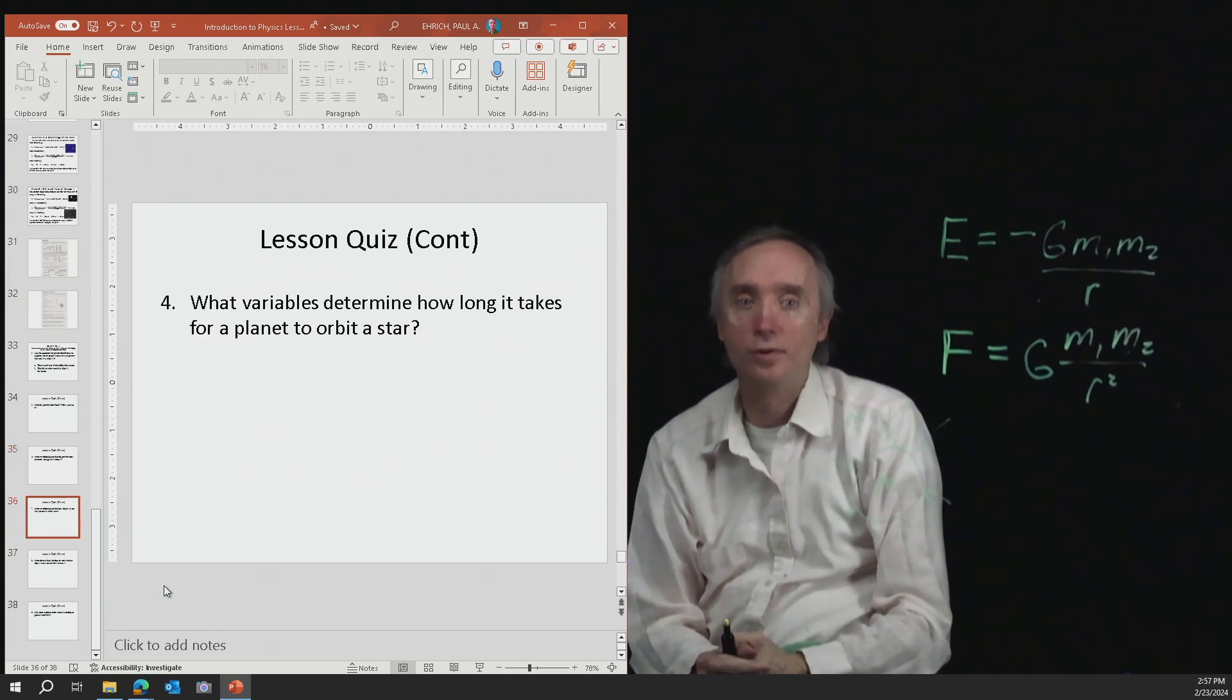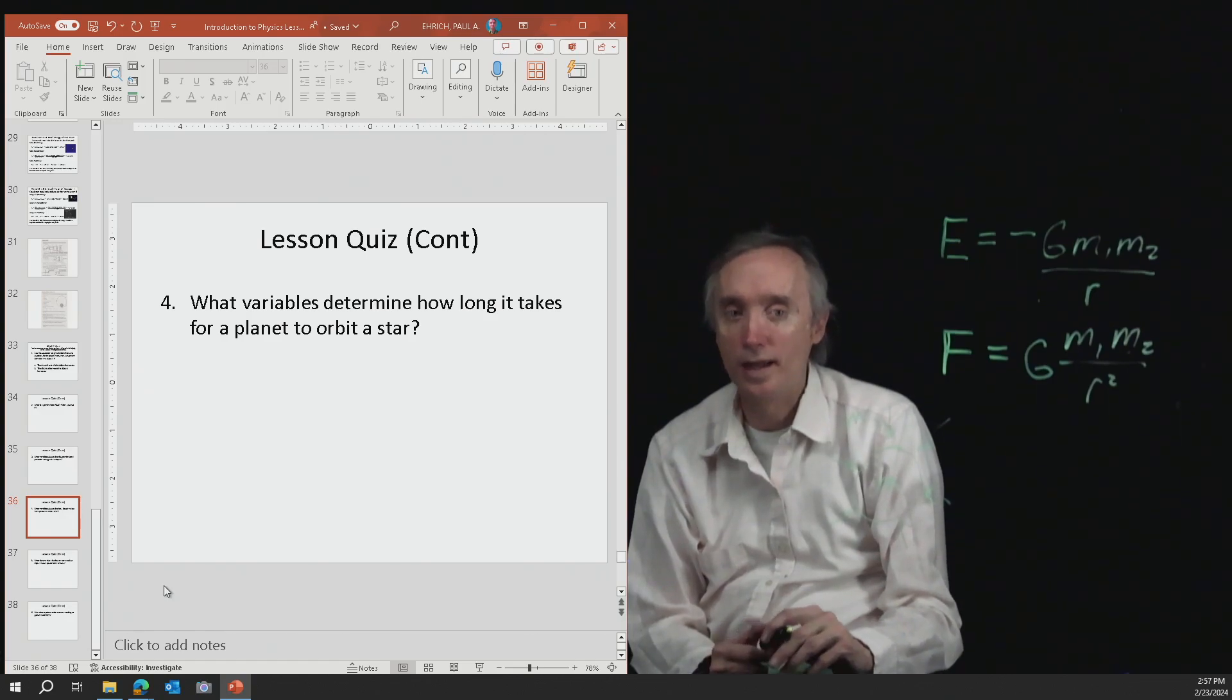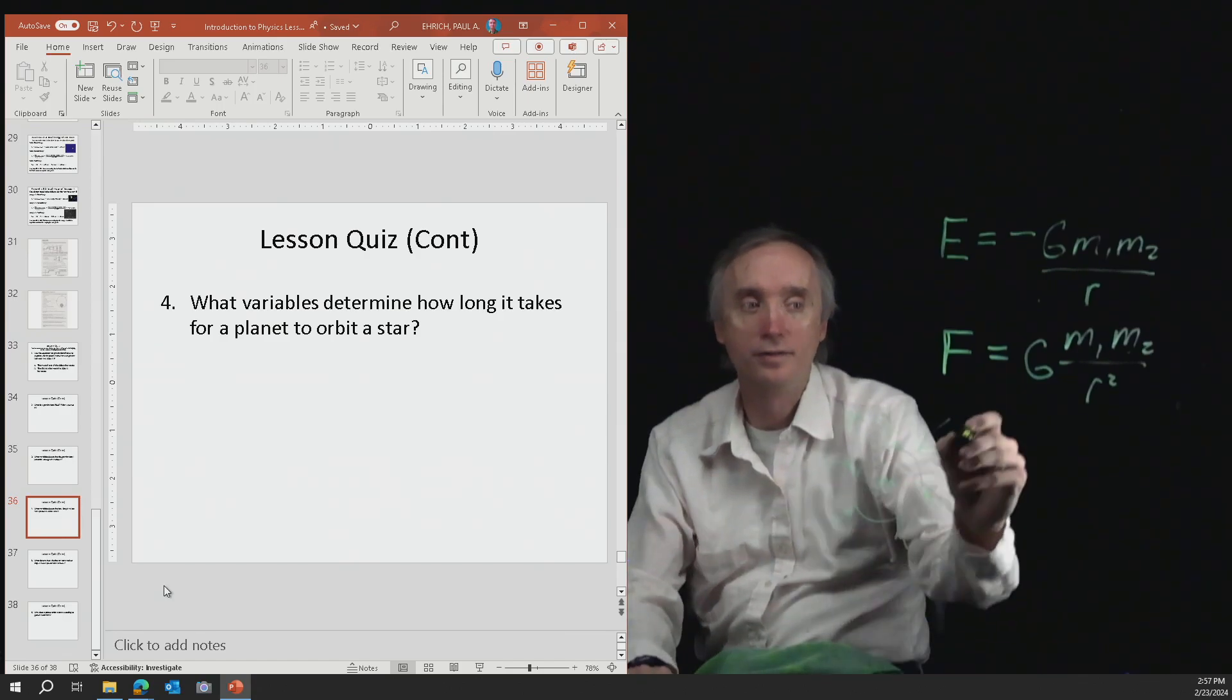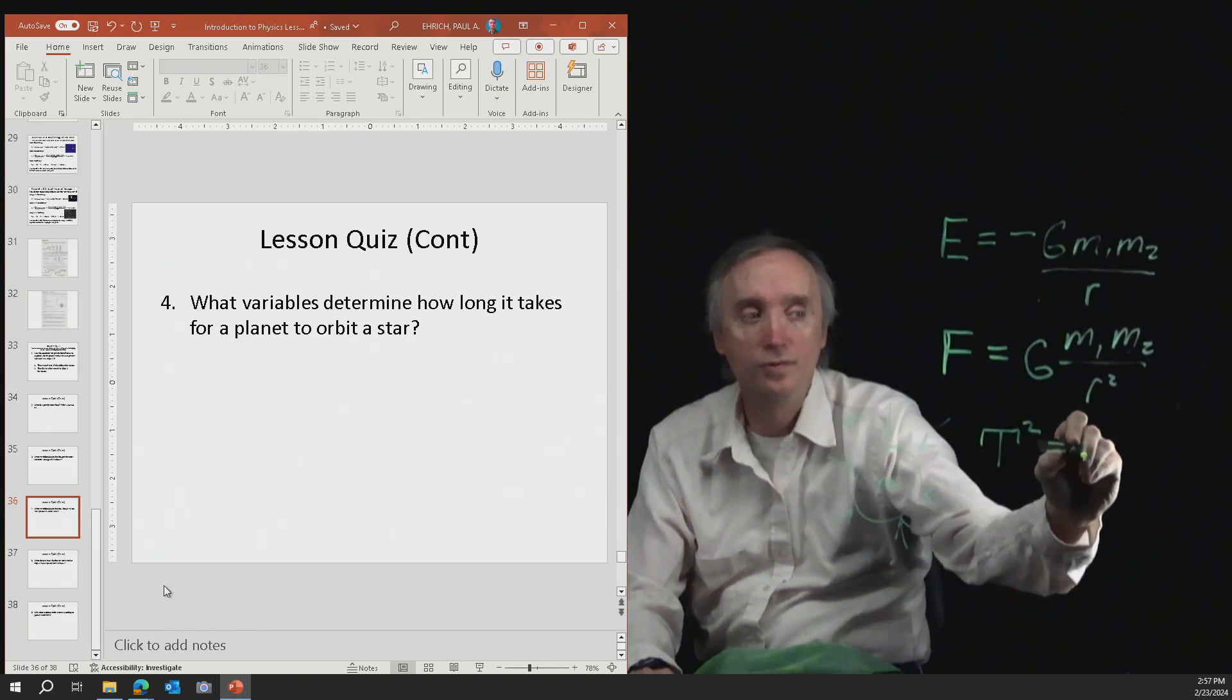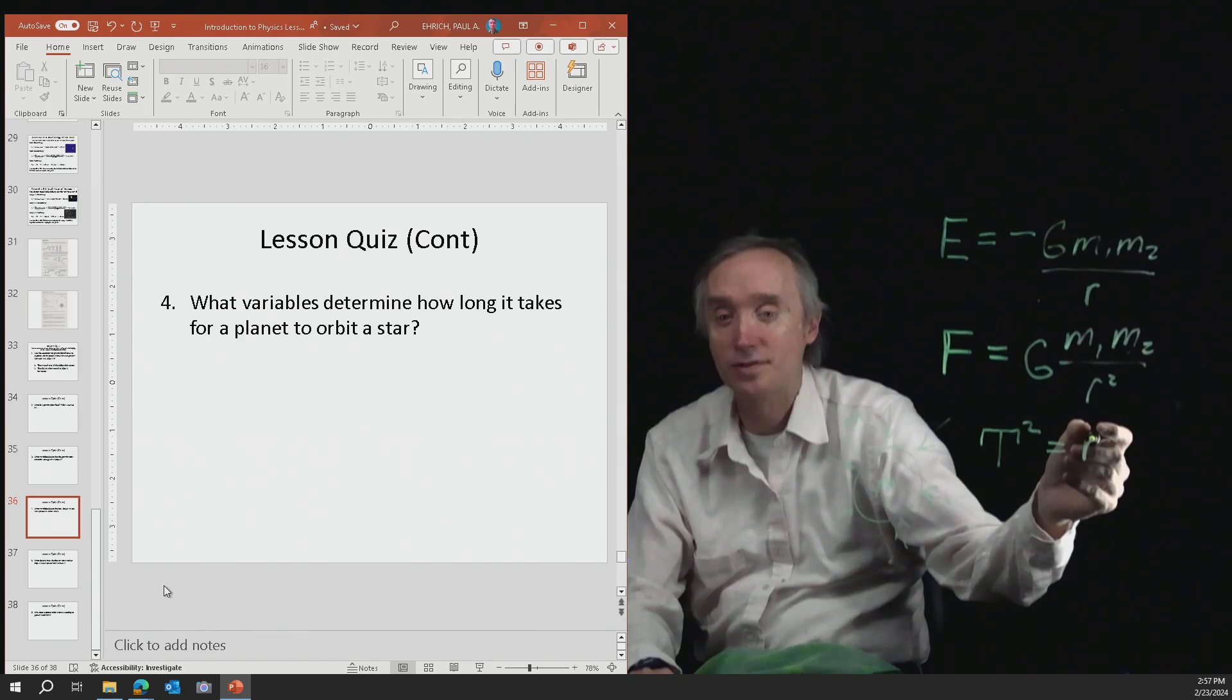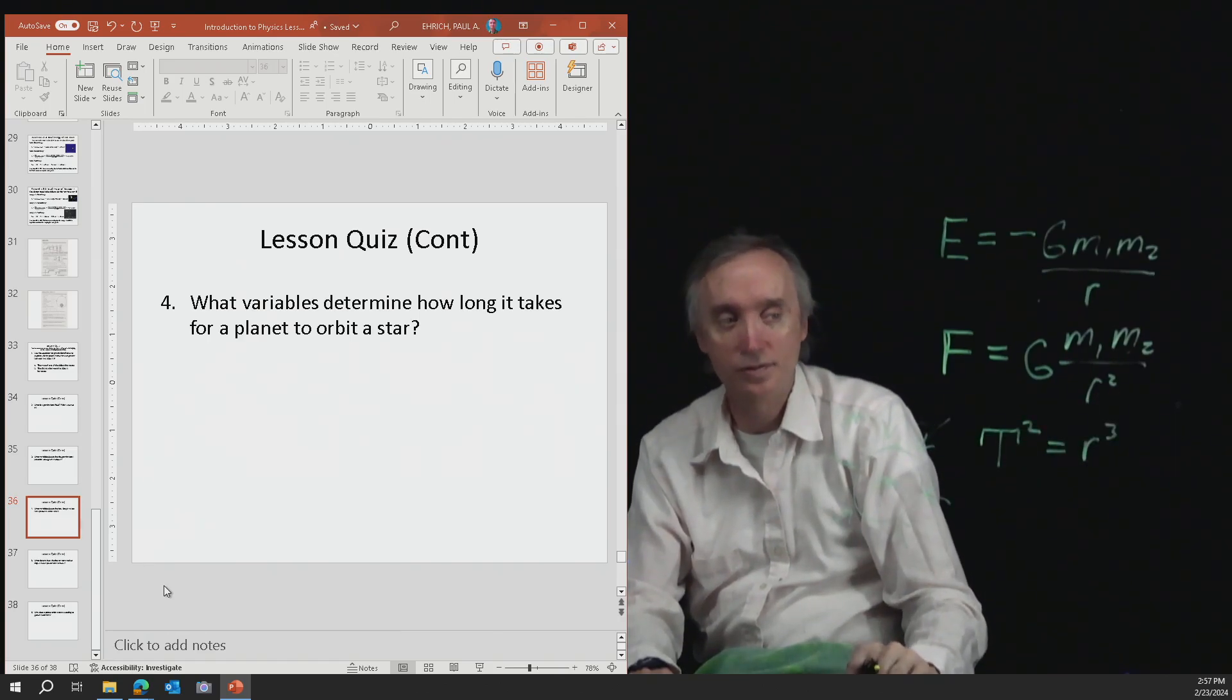Number four, what variables determine how long it takes a planet to orbit a star? So this is Kepler's blank law. Which one is it? Kepler's third law. So this is going to be the one that says that the period squared is going to be equal to the semi-major axis cubed or really it's just going to be the radius cubed.